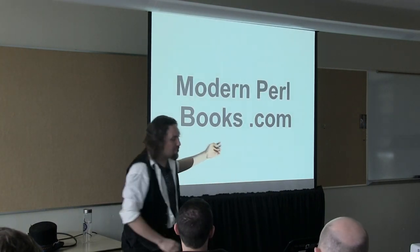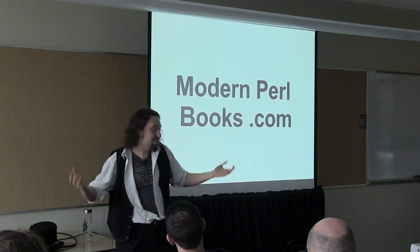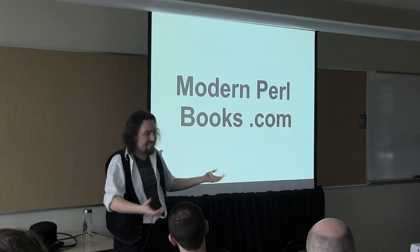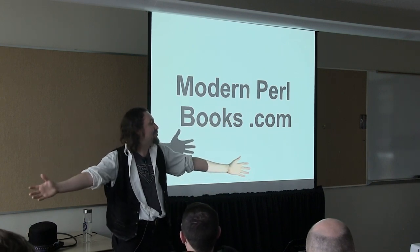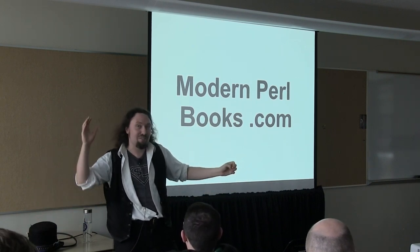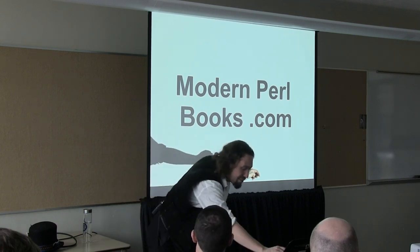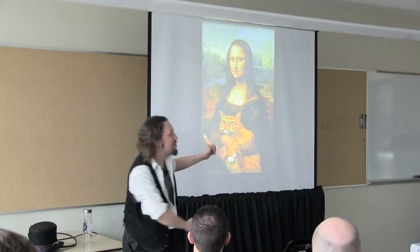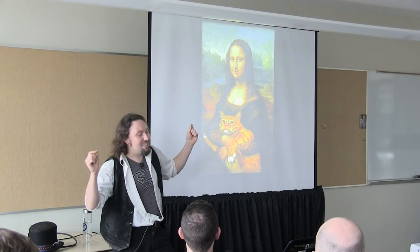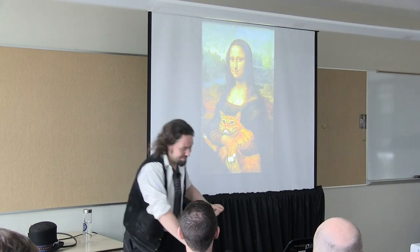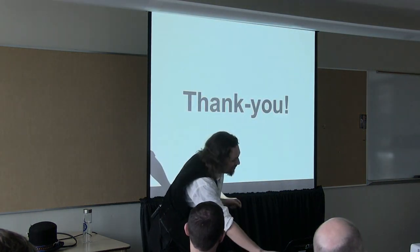If you're wondering how to learn about every single module mentioned in this talk, look at Task::Kensho. Kensho is Enlightenment — these are all of the enlightened modules, which includes everything I've shown you today and about a billion more. Also go to modernperlbooks.com — there's a free book there, it's chromatic's blog, it's fantastic. Hopefully with the information I've given you today, you will have an amazing time with the Perl Renaissance and you will write good code. Ladies and gentlemen, thank you very much.